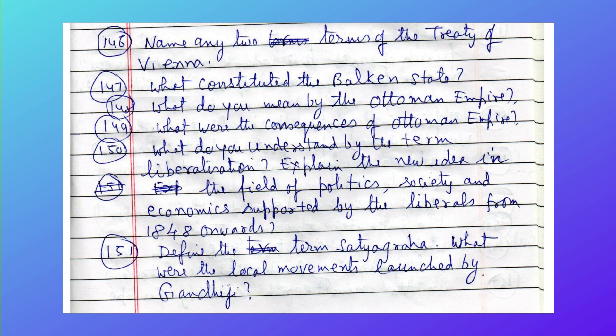What do you mean by the Ottoman Empire? What were the consequences of the Ottoman Empire? What do you understand by the term liberalization? Explain the new ideas in the fields of political, social, and economic life supported by the liberals from 1838 onwards.